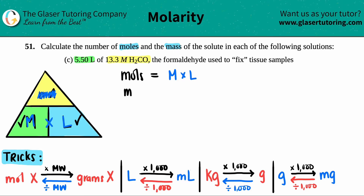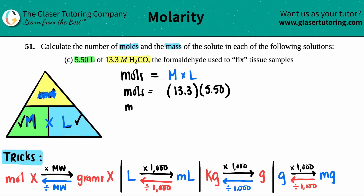Now all we have to do is the math. Moles equals molarity 13.3 times 5.50. You can keep the units in if you want, but just know the end answer is in moles. We get 13.3 times 5.50 — three sig figs — so we get 73.2 moles of this formaldehyde, H₂CO. So we answered the first question.